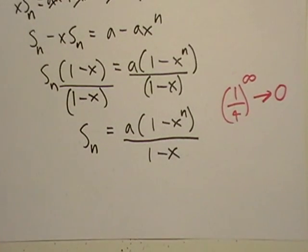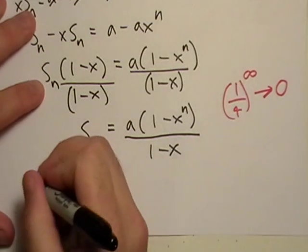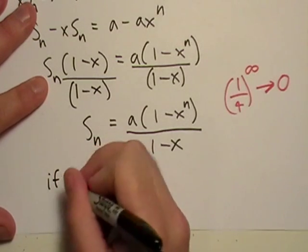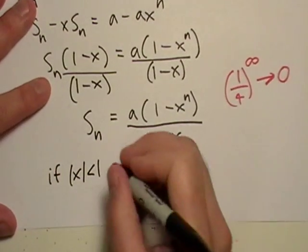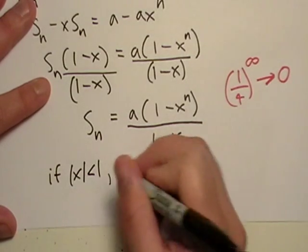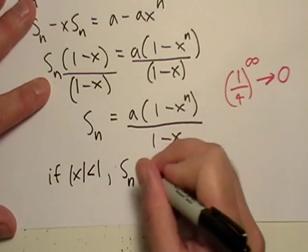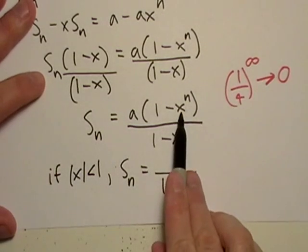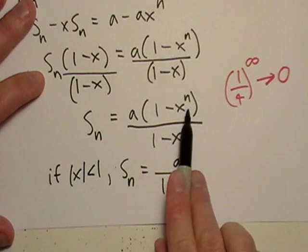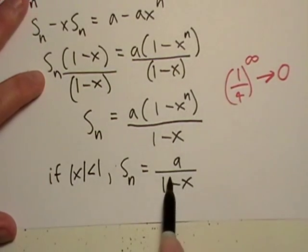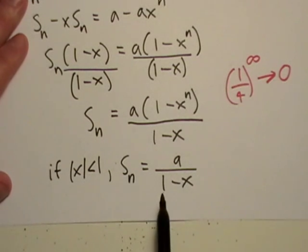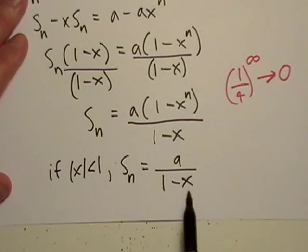So, the consequence of this is that if that happens, then this is pretty much zero. So, it's one minus zero is just one. So, we end up with a_1, the first term, and one minus x.